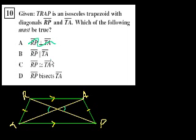RP is parallel to TA. Well, that's clearly not the case. They intersect. They're the diagonals. RP is congruent to TA. Well, now that looks pretty good to me, right? Because it's an isosceles trapezoid.